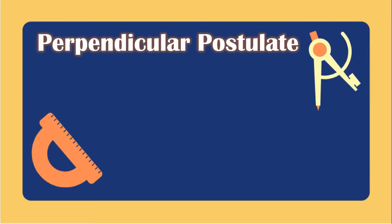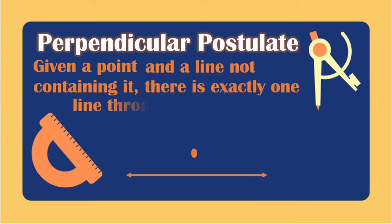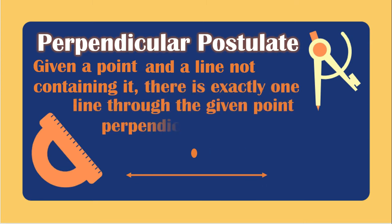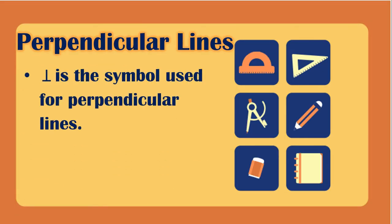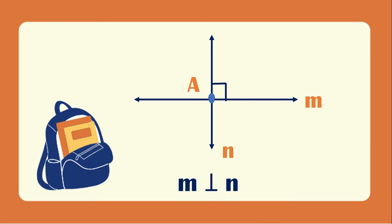The perpendicular postulate states that given a point and a line not containing it, there is exactly one line through the given point perpendicular to the given line. This is the symbol used for perpendicular lines. The lines are perpendicular if they form a right angle. If line M intersects line N at point A and a right angle is created, then M is perpendicular to N.